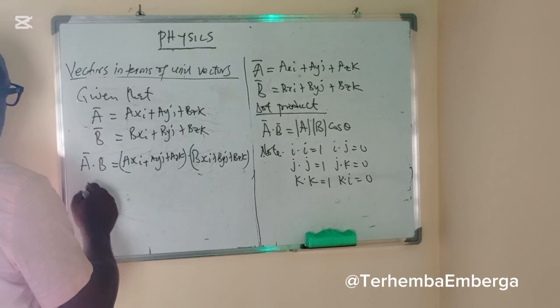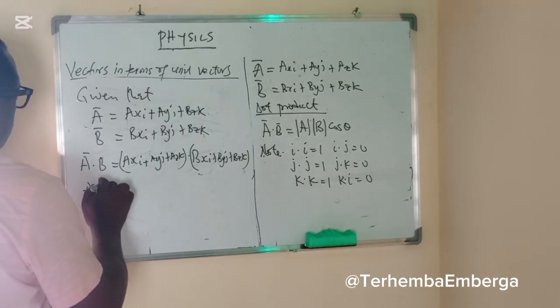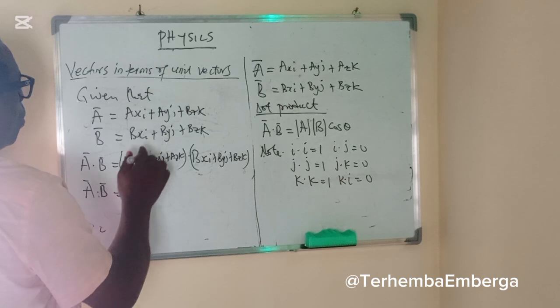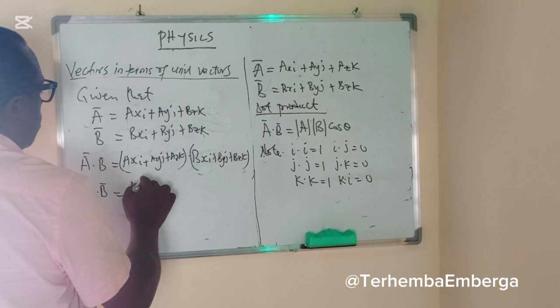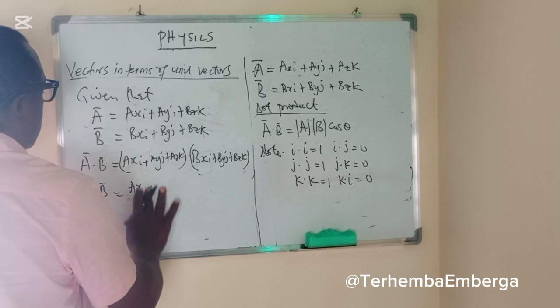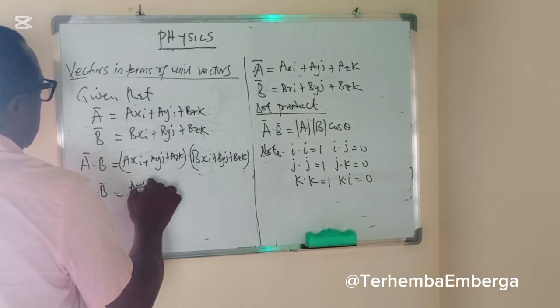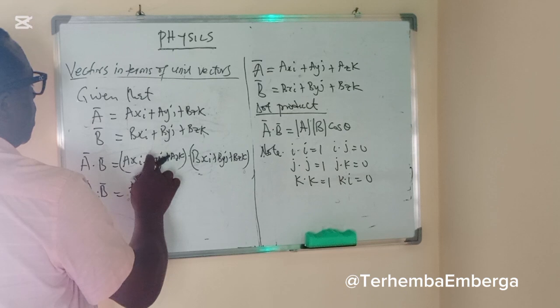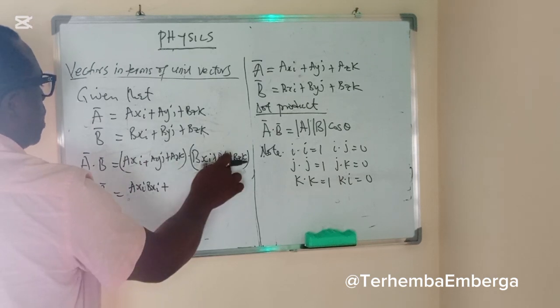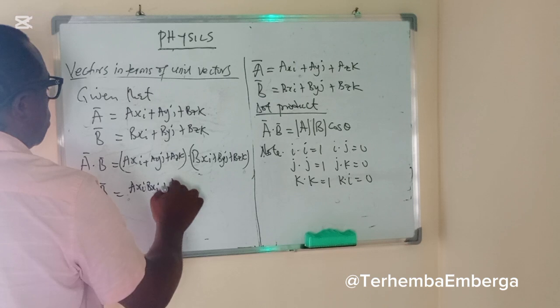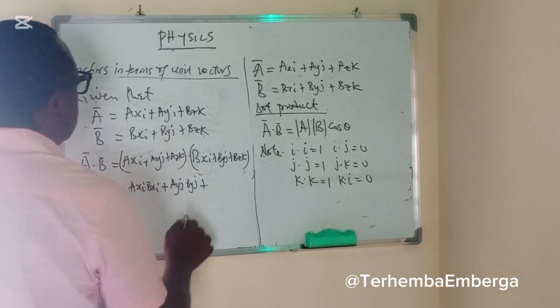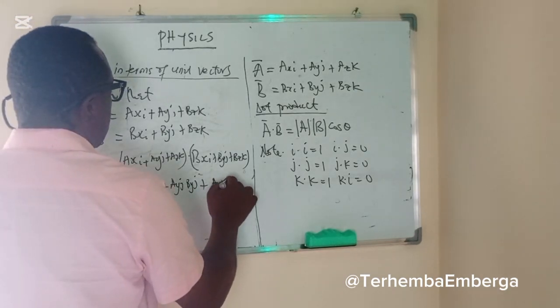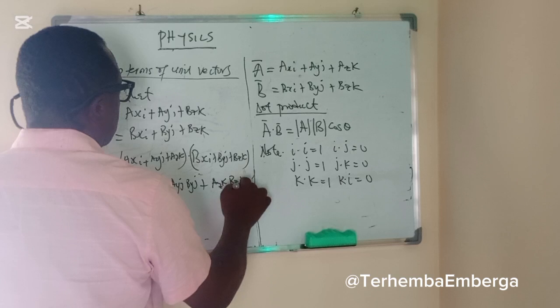If you multiply this out, we now have A dot B will be equal to AXI BXI plus, if you move to the second term, it's only this that will survive. That will be AYJ BYJ plus this. That will be AZK BZK.